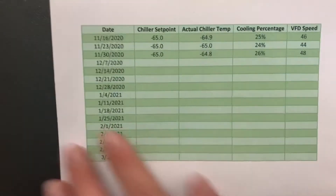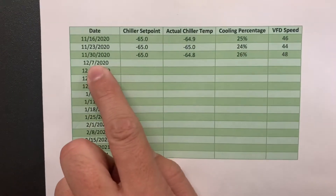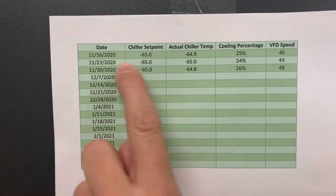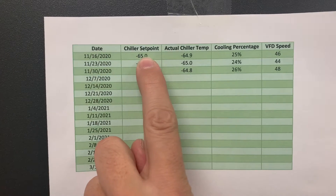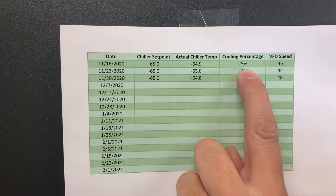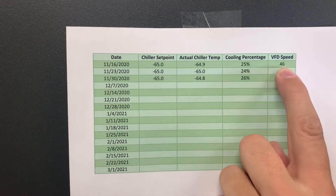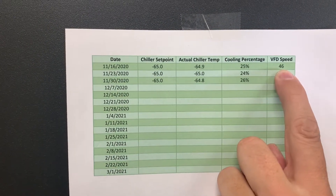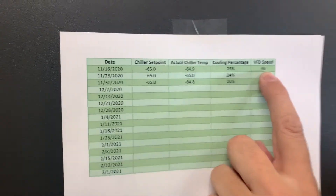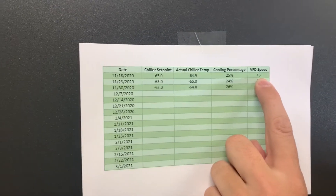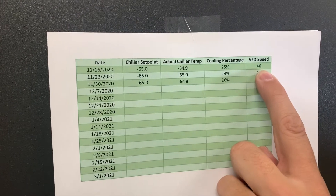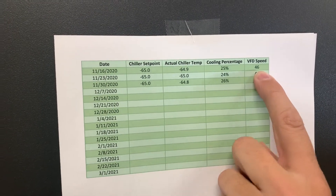We recommend a graph much like this. It gives the date, the chiller set point, the actual chiller temperature, the cooling percentage, and the VFD speed. The VFD speed is the amount of power applied to your pump to maintain your pressure set point.